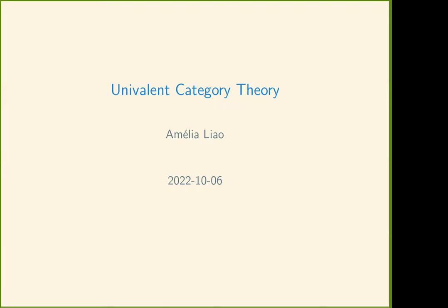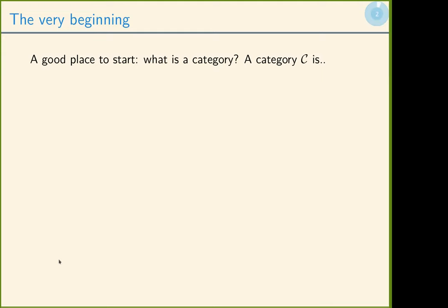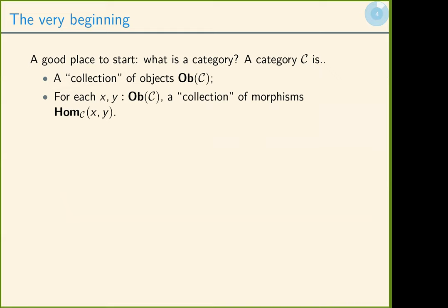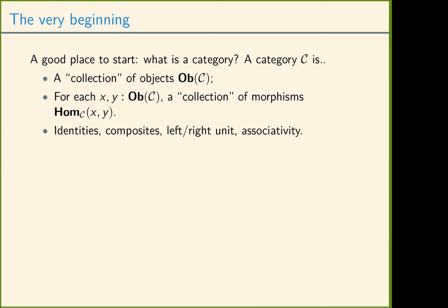A good place to start is at the very beginning. What is a category? A category has a collection of objects C. For each pair of objects, a collection of morphisms hom(C) from X to Y. We're leaving the word 'collection' fuzzy because that's the whole point. We have identities, composition, left and right unit, and associativity. Since we're doing type theory, a good attempt would be to say that a collection is a type.